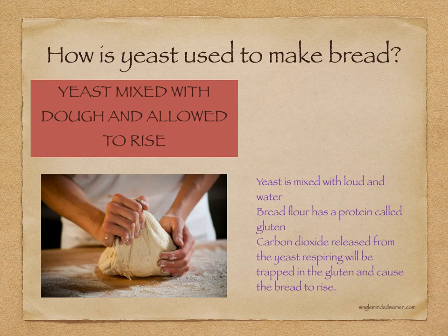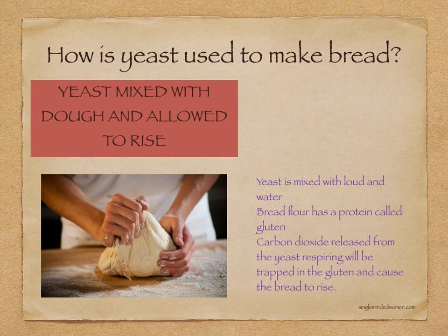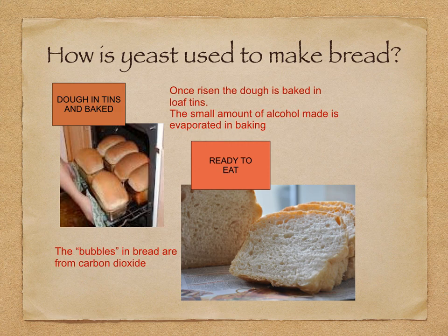How is yeast used to make bread? This relies on the production of carbon dioxide when yeast respires. Yeast is mixed with flour and water. Bread flour has a protein called gluten. When carbon dioxide is released from the respiring yeast, it is trapped in the gluten, and this causes the bread to rise. The bubbles you see in bread are from the carbon dioxide. Once risen, the dough is baked in loaf tins, and the small amount of alcohol that is made will evaporate during baking.